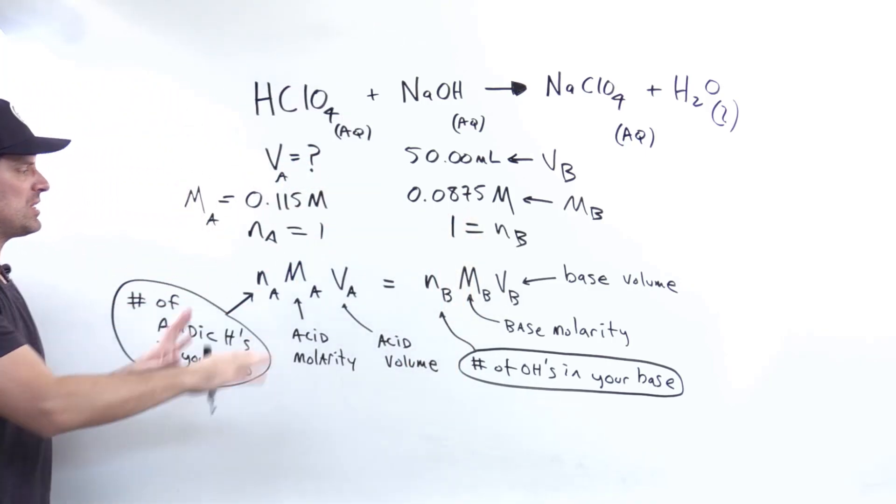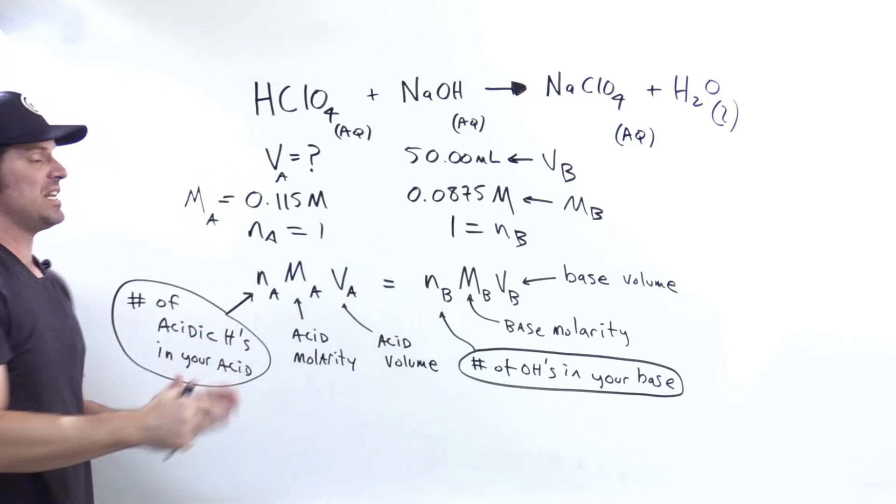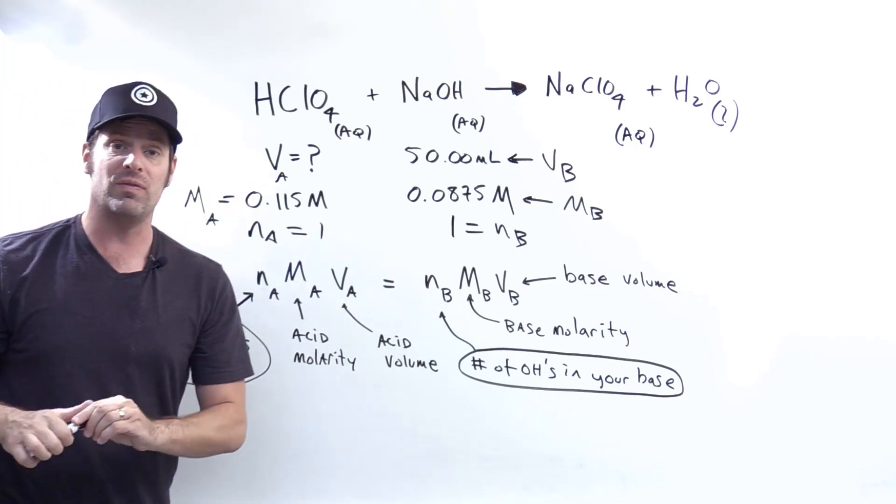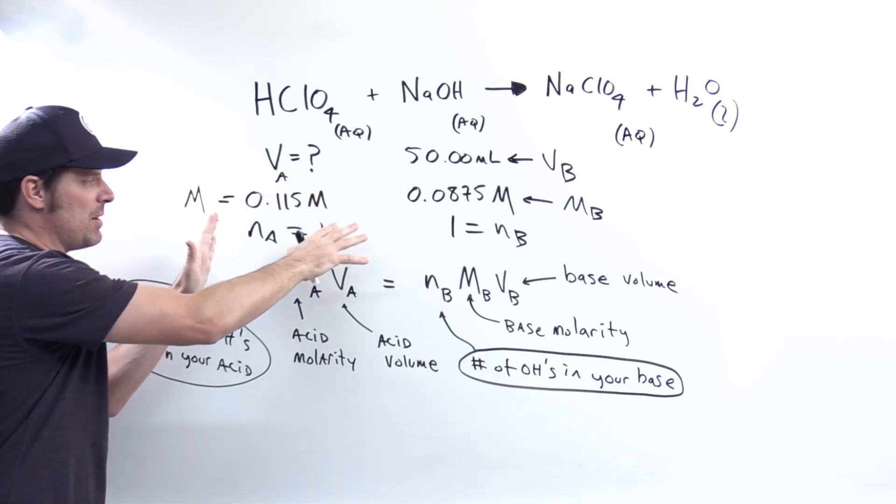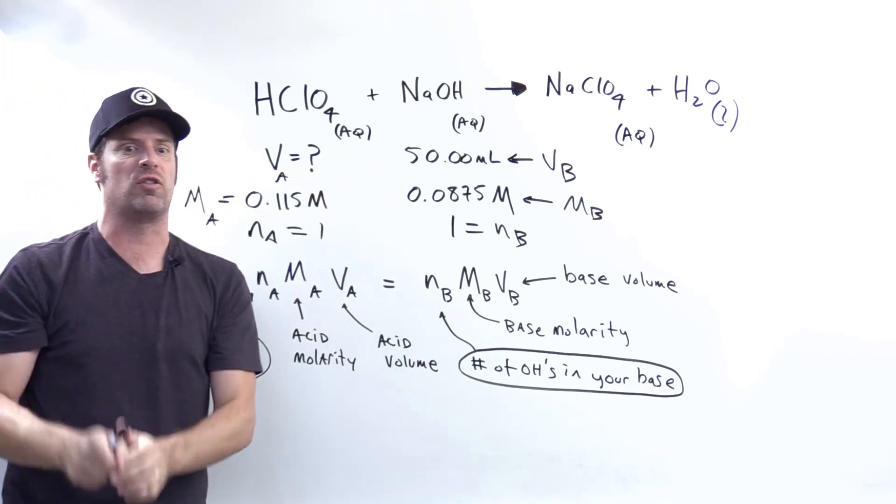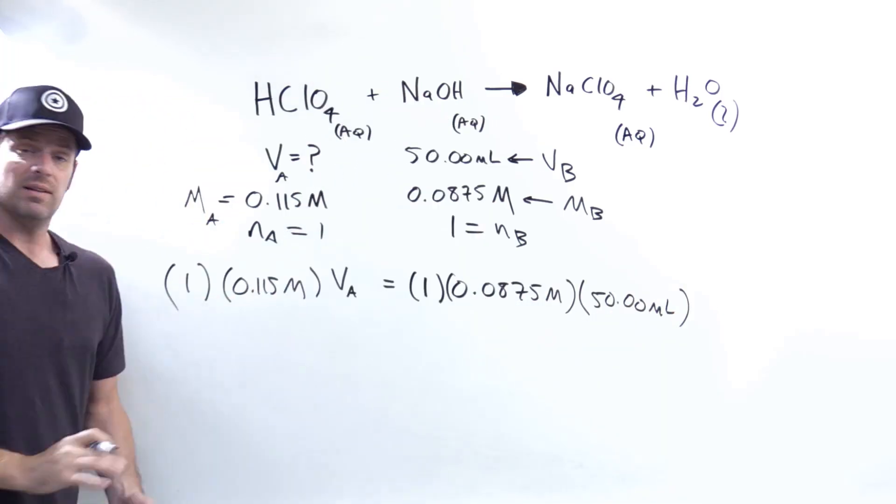I now have all the components to solve this equation except for the missing VA, which I will do using algebra. Let's replace all these terms with their respective numbers and then algebraically solve for VA.